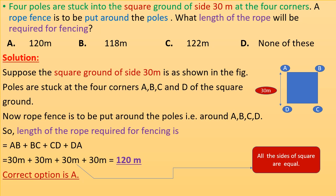The rope fence is to be put around the poles, that is around A, B, C, and D. So the length of rope required for fencing is AB plus BC plus CD plus DA — the sides of the square. All sides of a square are equal, so the length of each side is 30 meters. Therefore, the total length of rope is 30 + 30 + 30 + 30 = 120 meters. The correct option is B.